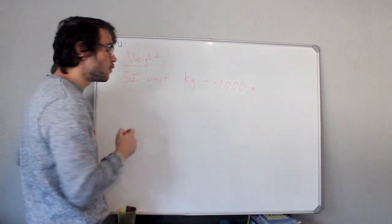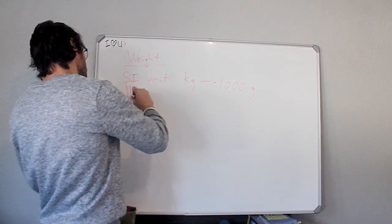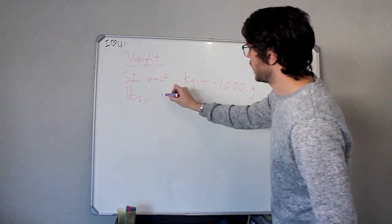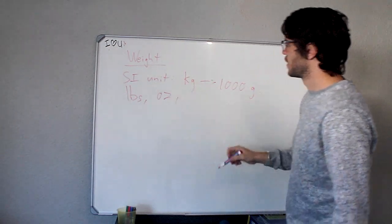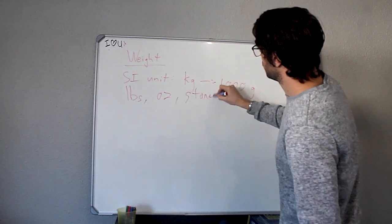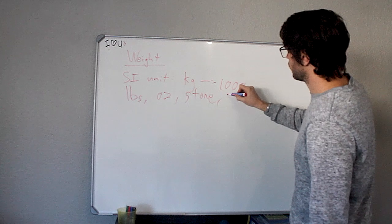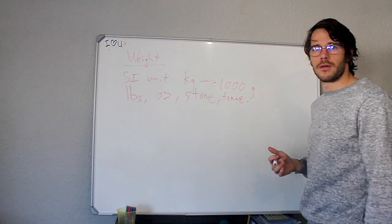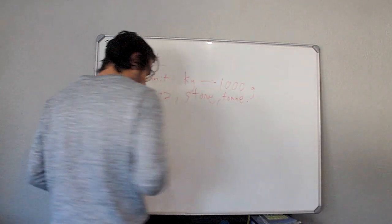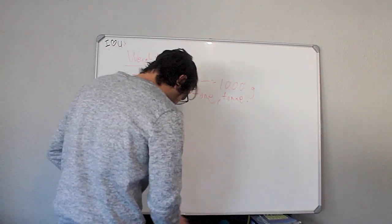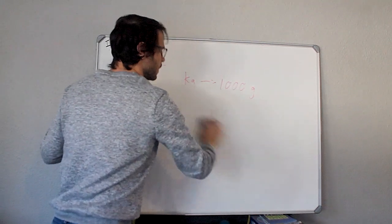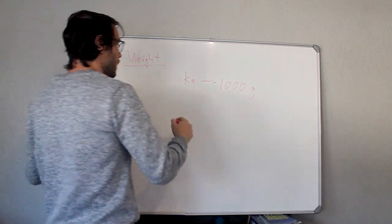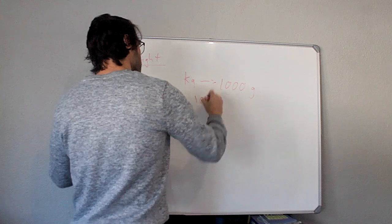There are conversion constants for all of the different units of measurement for weight, including for pounds, for ounces, for stone, for tonne. If you know the constants, then it's as simple as multiplying by those different constants. The kilogram and the gram is based on the same linearity as we saw with distance, whereby we're working in powers of 10.